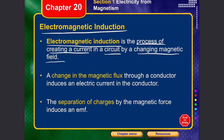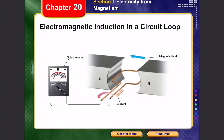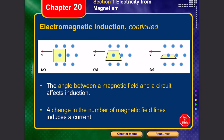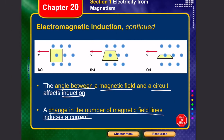Faraday's law of induction states that any change in the magnetic flux through a conductor induces an electrical current in the conductor. This happens because of the separation of charges by the magnetic force that induces an EMF. The angle of the magnetic field relative to the circuit affects the amount of induction that occurs.